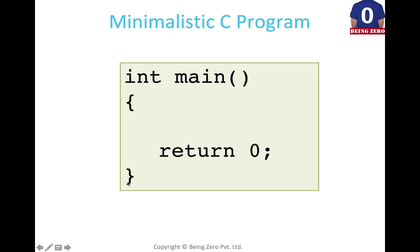Inside the main function we have return 0 as a statement, indented with a tab. This should be our minimalistic C program that we should be able to write bug-free anytime.